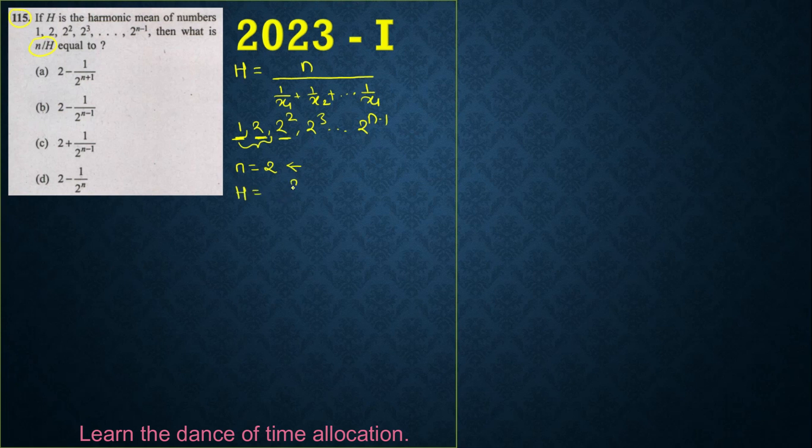H equals 2 divided by reciprocal of first number and reciprocal of the second number. So it is 2 divided by 2 plus 1, which is 3 by 2. So the answer is 4 by 3. This answer is harmonic progression.